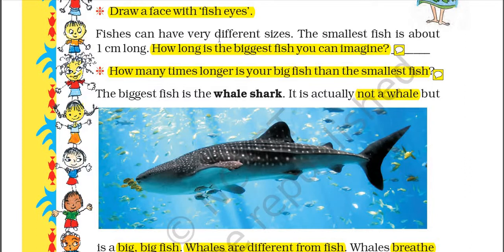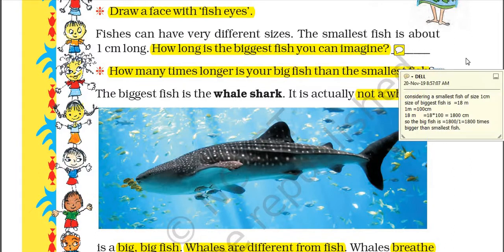Fishes can have very different sizes. The smallest fish is about 1 centimeter long. The biggest fish is 18 meters in length. How many times longer is the big fish than the smallest? Considering the smallest fish is 1 cm and the biggest is 18 meters: since 1 meter = 100 cm, 18 meters = 1800 cm. So the big fish is 1800 ÷ 1 = 1800 times bigger than the smallest fish.